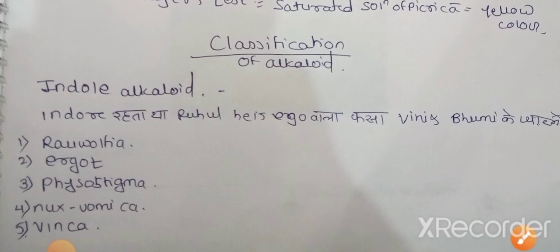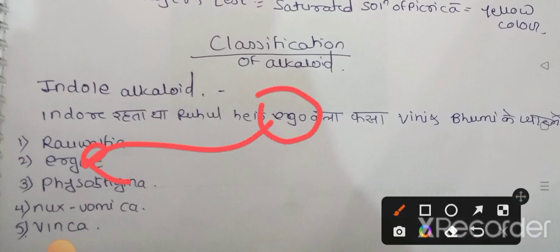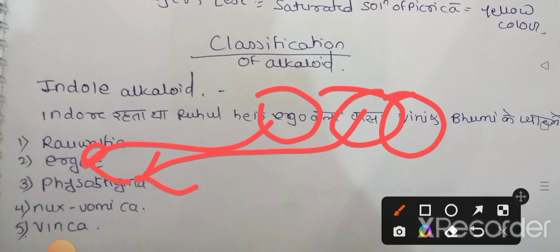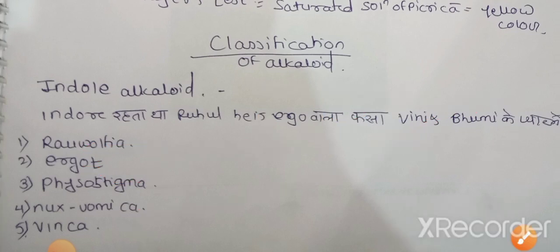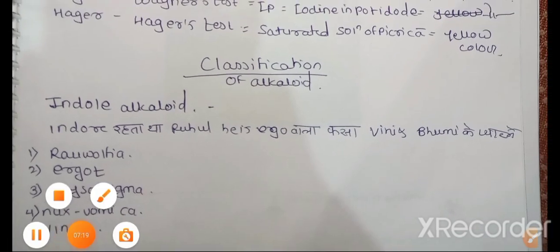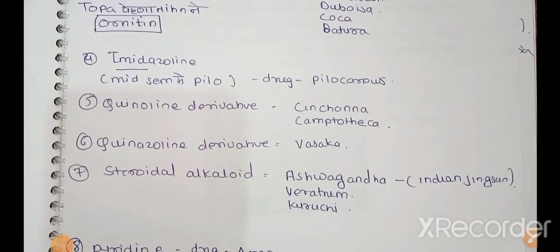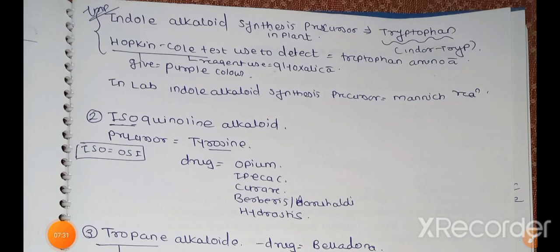So from Indore remember indole alkaloid, from Rahul remember Rauwolfia, from Ego remember Ergot, from Fasa remember Physostigmine, from Vinny remember Vinca, and from Bhoomi remember Nuxvomica. So this is the drug which comes under which class - alkaloids. The trick for alkaloids you should remember: Rahul was very ego, he was stuck in the love of Bhoomi and Vinny. So you can remember this trick. This is compulsory for GPAT point of view.